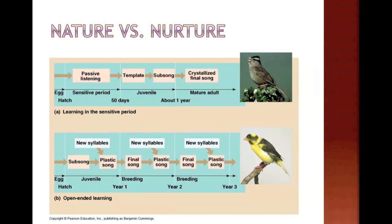That song won't change after its sensitive period. Down at the bottom, however, you have an example of open-ended learning from another type of bird. In this situation there is no sensitive period — the bird is constantly adapting its song based on its experience. You can see that at the end of each breeding season, the song is going to be changed for the next year.